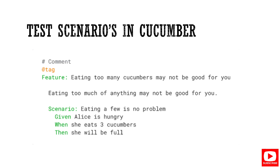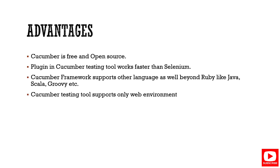Behind each feature, we have step definitions. Step definitions are where we write the actual code. These use the Gherkin language — the keywords are Given, When, and Then. Feature, Scenario, Given, When, Then — these are all part of the Gherkin language. We can also override with other test engines when implementing step definitions.